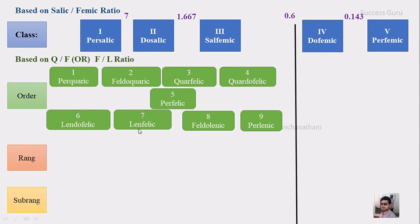If you are computing F by L (feldspar by feldspathoid): if the answer is less than 0.143, you are in order number 9 — per-lenic; from 0.6 to 0.143 is order 8 — feldo-lenic; from 1.667 to 0.6 is order 7 — len-felic, where both are equal; from 7 to 1.667 is order 6 — lendo-fenic; and if the answer is more than 7, it is per-felic. The transition zone between the two ratios means that if Q by F is less than 0.143 or F by L is more than 7, both yield order number 5 — per-felic.